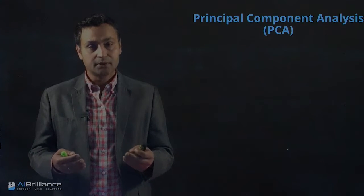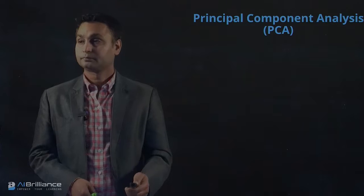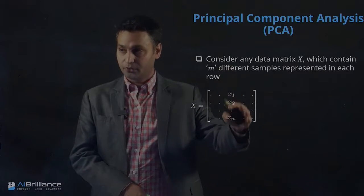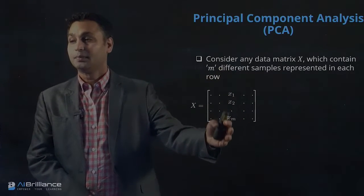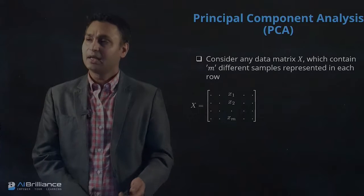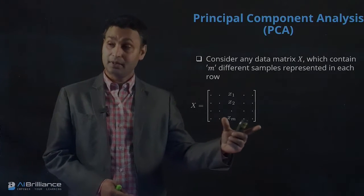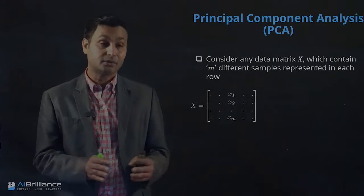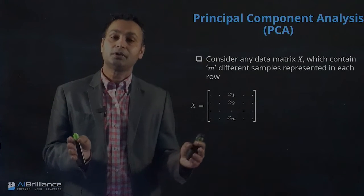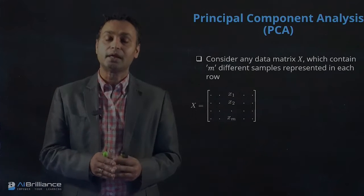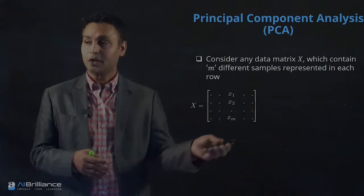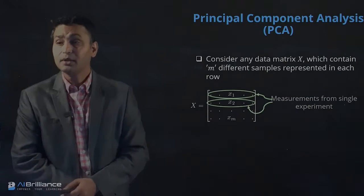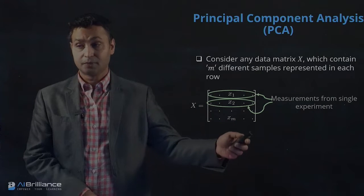Consider a data matrix X which contains m different samples, each represented in a row. This could be m number of pictures of faces, for example. You want to reduce the dimensionality because n — the number of columns — is very high, and not all the pixel information may be important. So we want to represent X in a smaller dimension if possible.